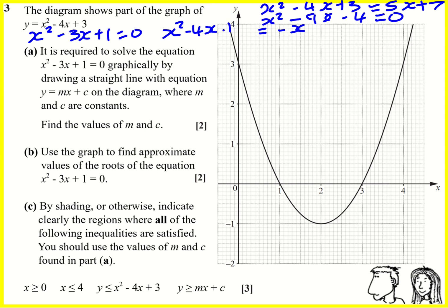That will give me plus 3 and it will be plus 2. So in fact this is the line I want to draw: y equals minus x plus 2. Therefore m is going to equal minus 1 because that's what the minus represents, and c is going to equal 2.